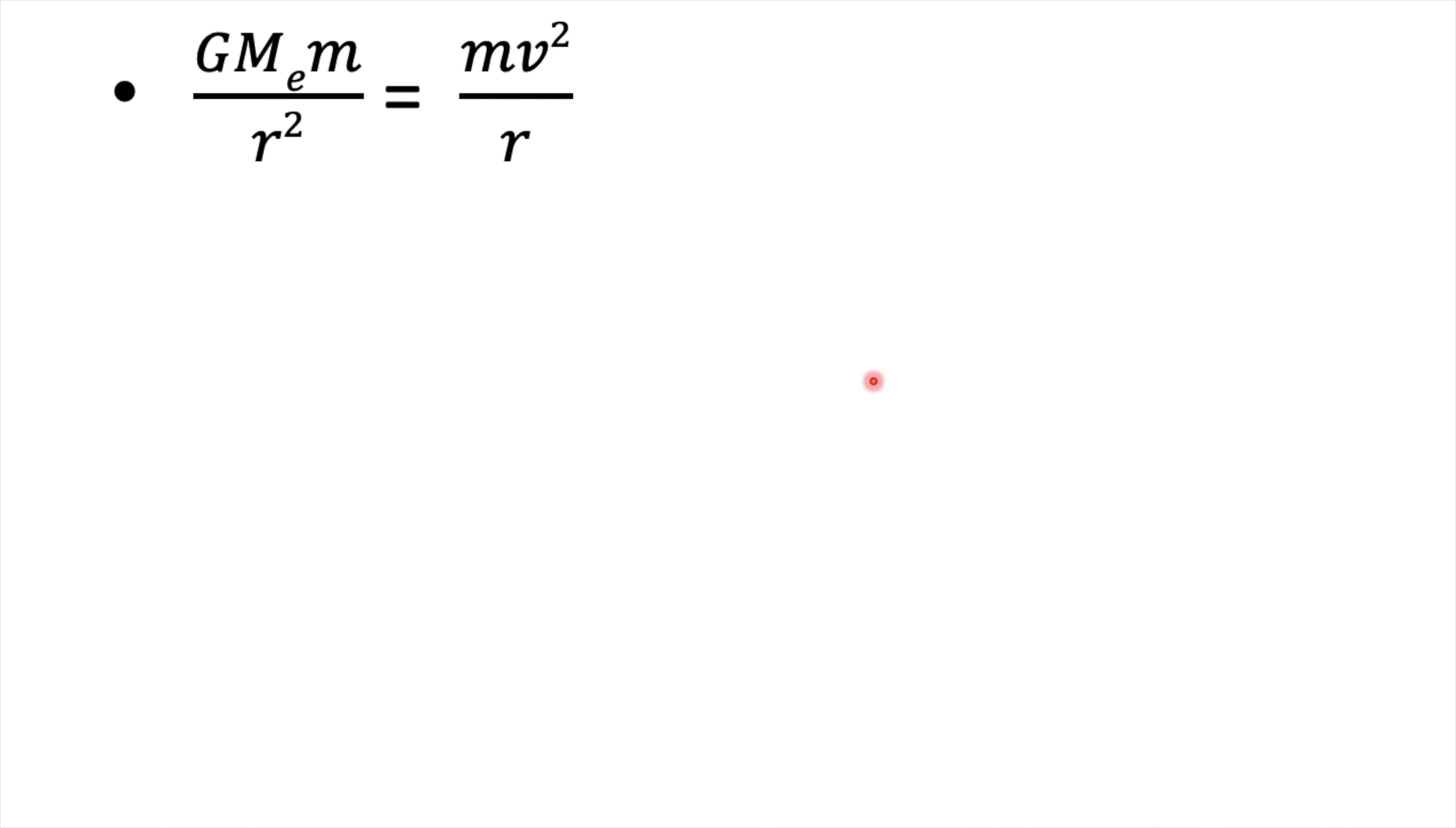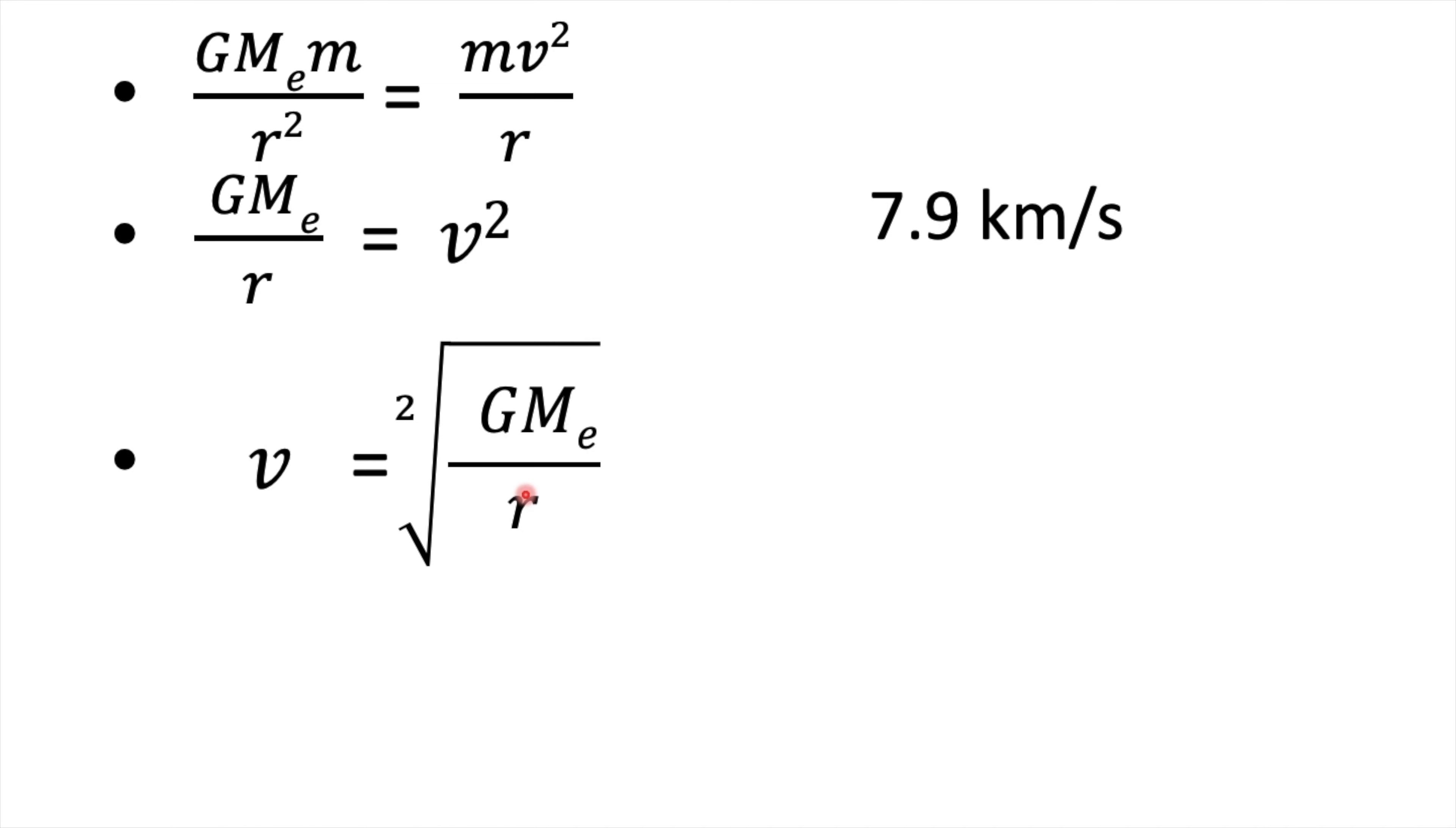Where G is the gravitational constant, M_e is the mass of the earth, and r is the distance of the moving body from the center of the earth. From this formula we can see that the velocity of the object has nothing to do with the mass of the object, but with the gravitational constant and mass of the earth itself and its distance from the center of the earth.